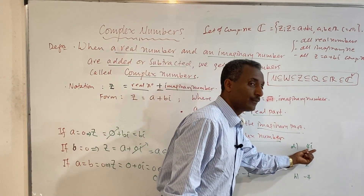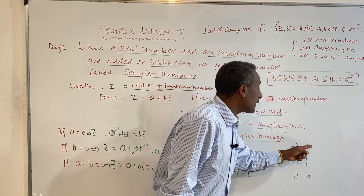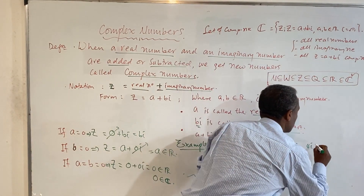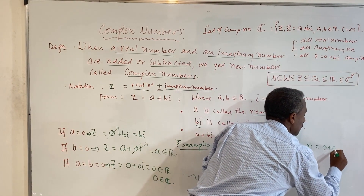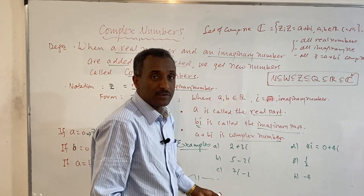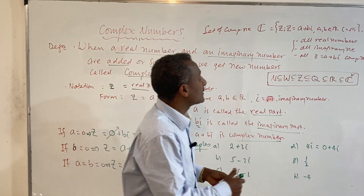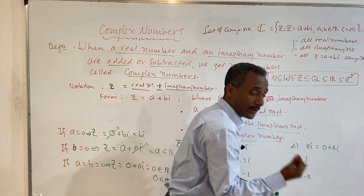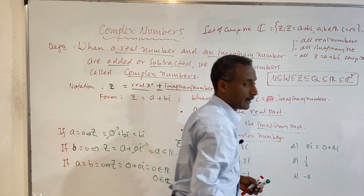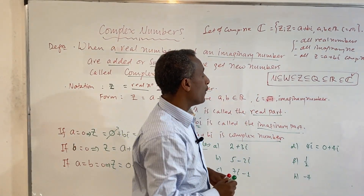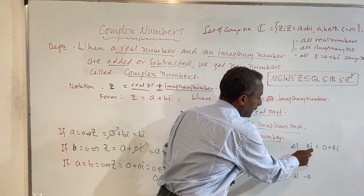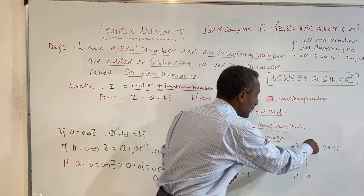The number 4i: the real part is zero, which means we can rewrite it as zero plus 4i. Is 4i minus 1 a complex number? Yes — it is a complex number. The real part is zero and we can rewrite it in the standard form. Is it imaginary? It is not purely imaginary.